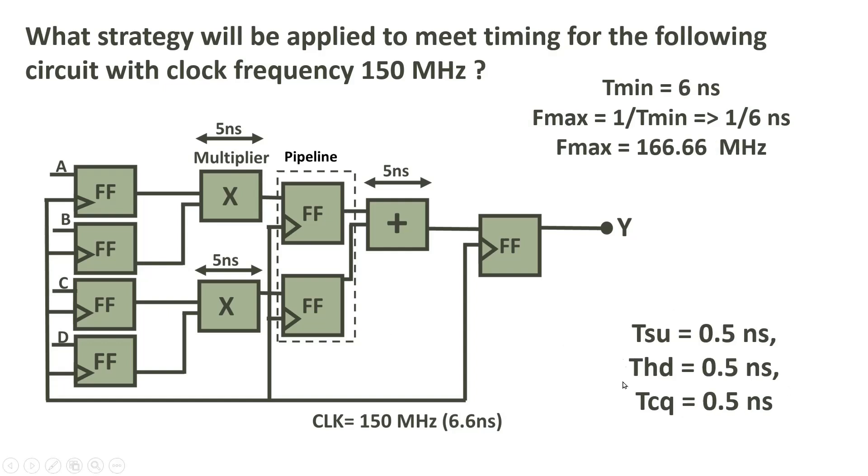After making this correction, let us try to recalculate tminimum. Tminimum will be tcq of this flip flop, which is 0.5, then this multiplier delay, that is 5 nanosecond, so 6, and setup of the flip flop, this is 0.5. This will become 6 nanosecond. So you can calculate f max, which is 1 by t minimum, 1 by 6 nanosecond. So f maximum will be 166.66 megahertz, which is quite more than 150 megahertz.